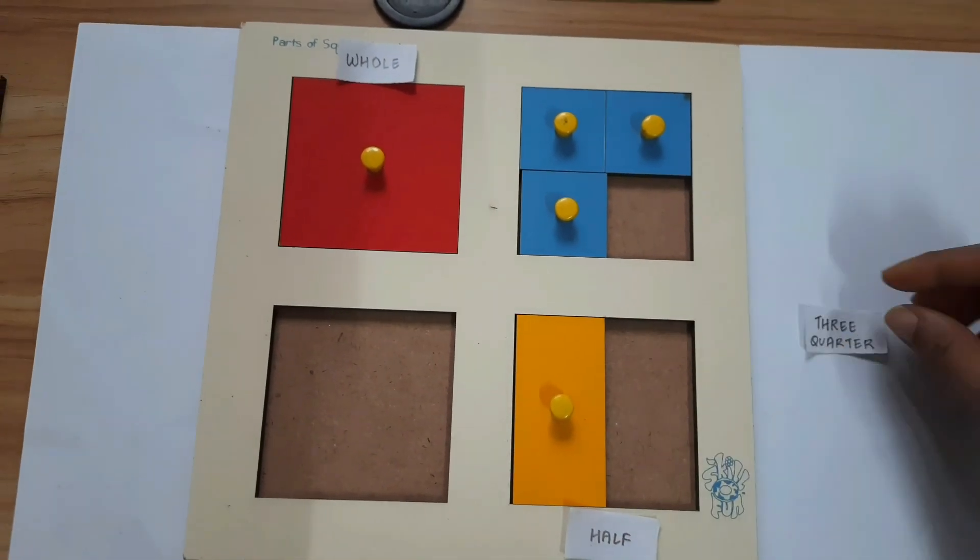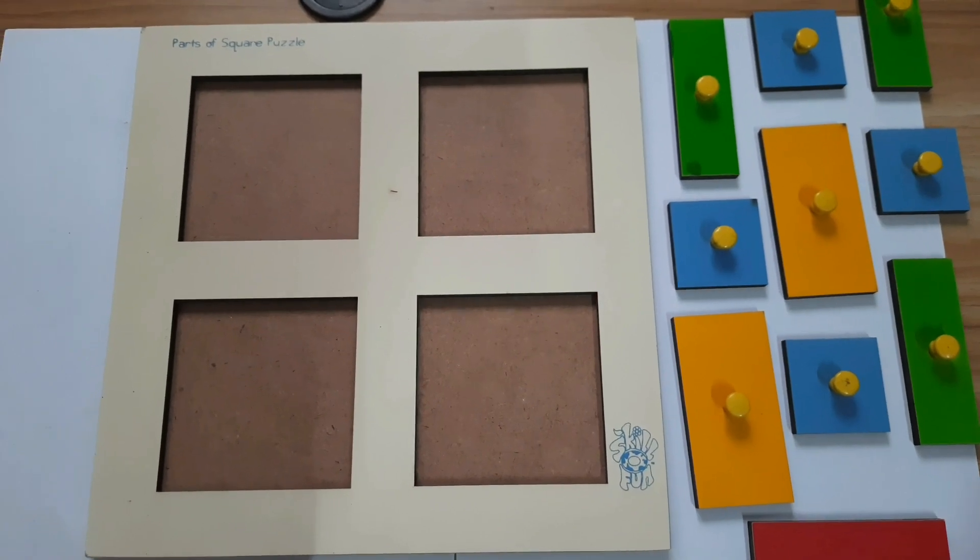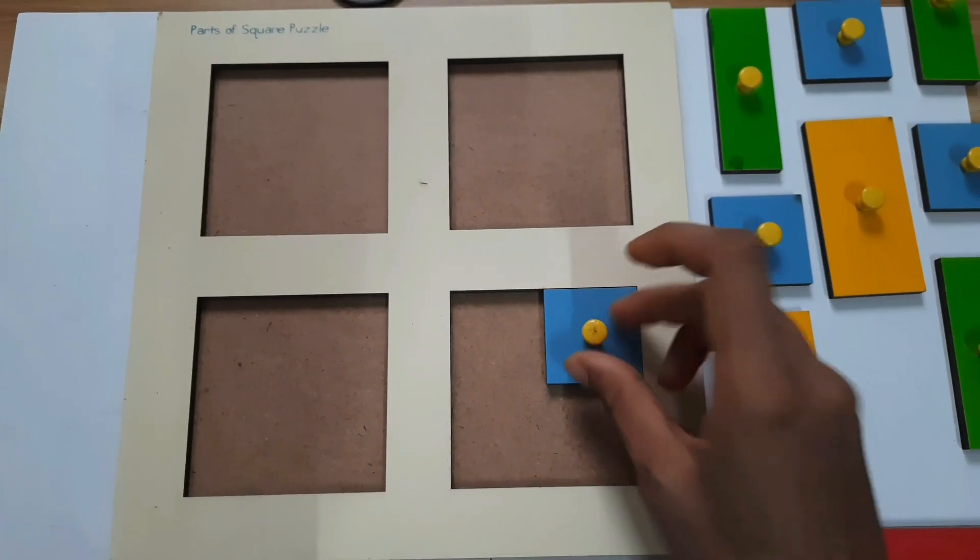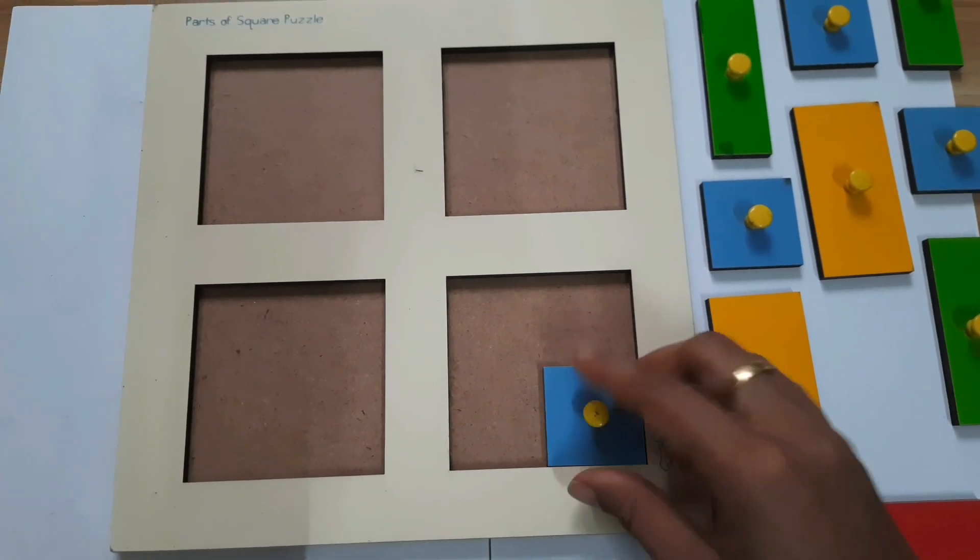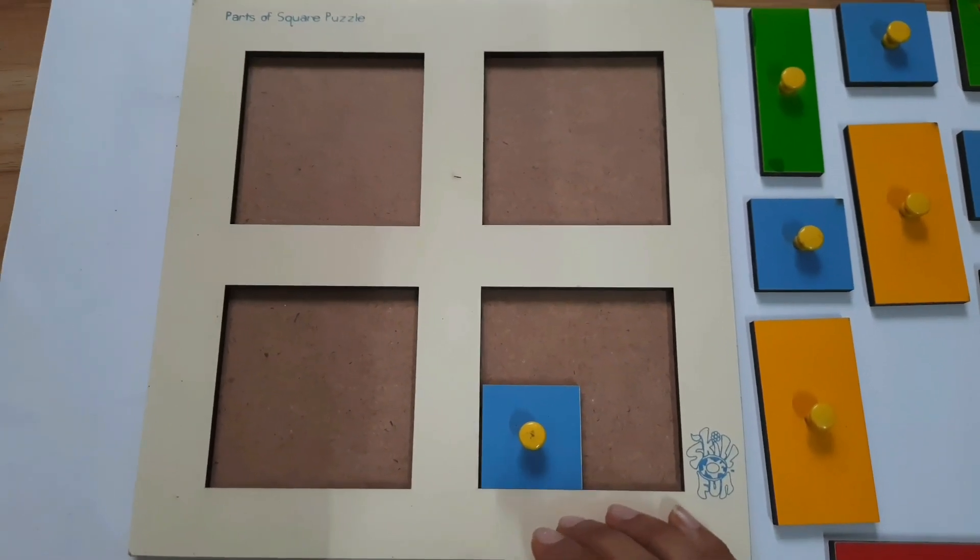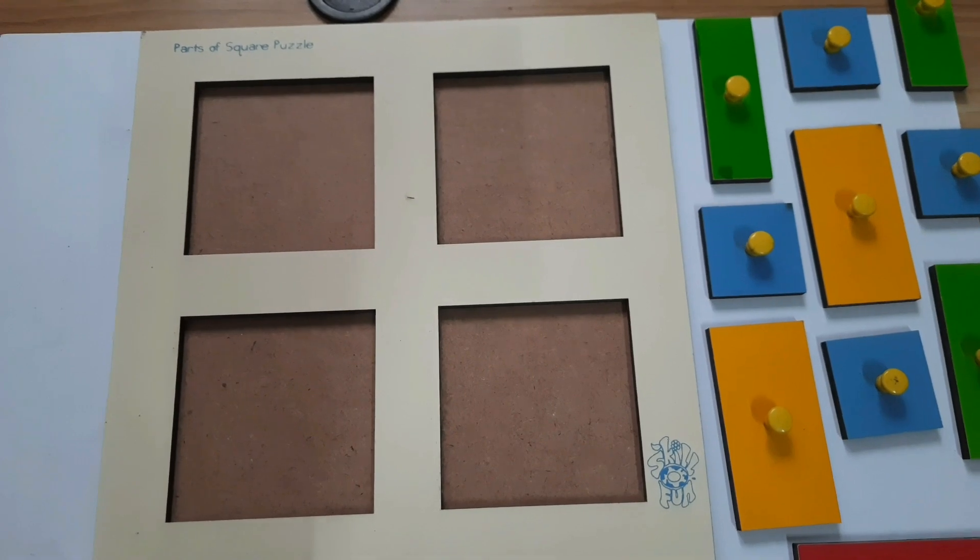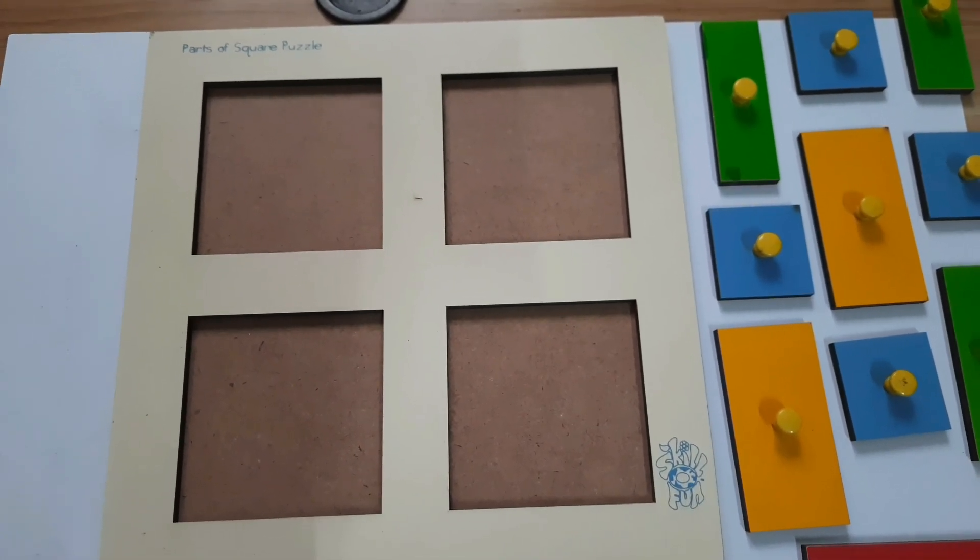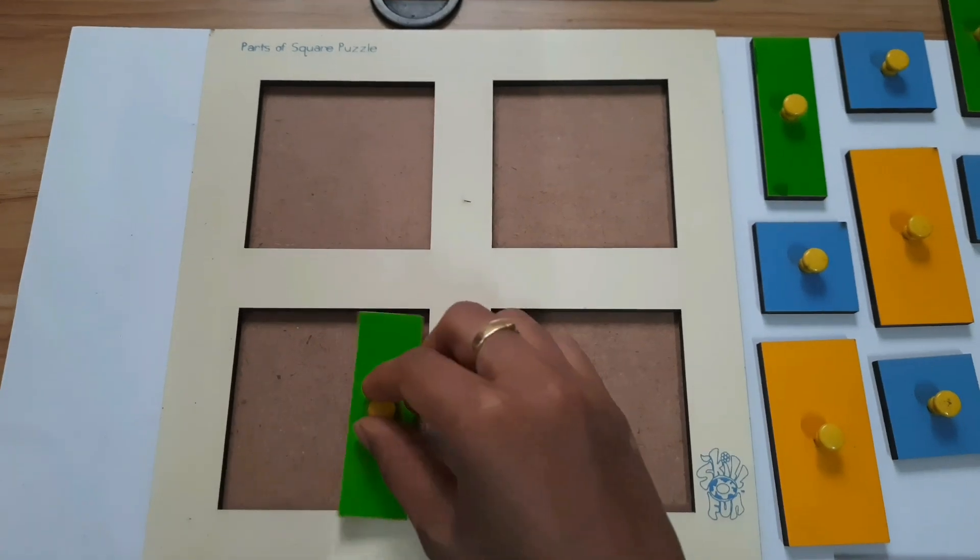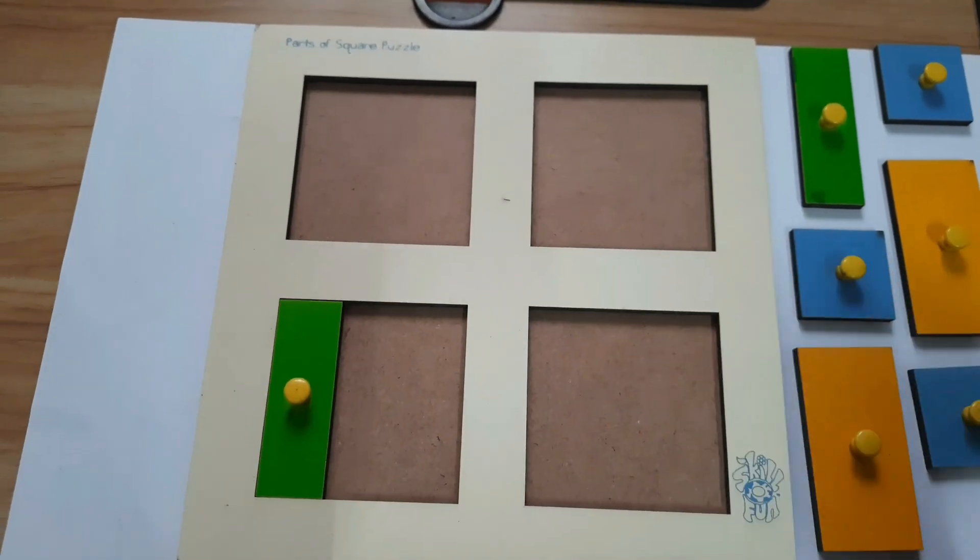How many parts are in total? 1, 2, 3. Now ask the child to make 1 by 4—you can keep it in any position: here, or here, or here. Or you can ask the child to make 1 by 3, in any position.